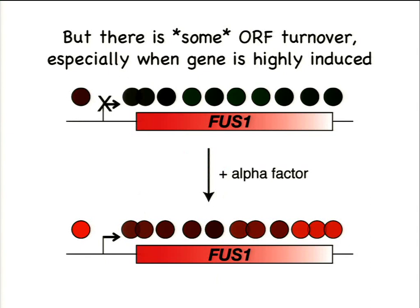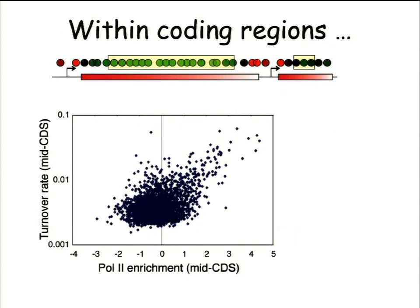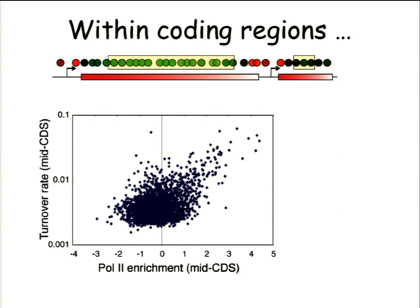If you compare turnover rates over the middle of coding regions to the enrichment of RNA polymerase — the transcription rate of the gene — the vast majority of genes have very low turnover rates, very stably bound by histones. But very highly transcribed genes do replace nucleosomes at a relatively high rate. Interestingly, the genes above the diagonal all turn out to be genes we've induced through our experimental manipulations — the GAL genes and the sex genes induced by alpha factor.